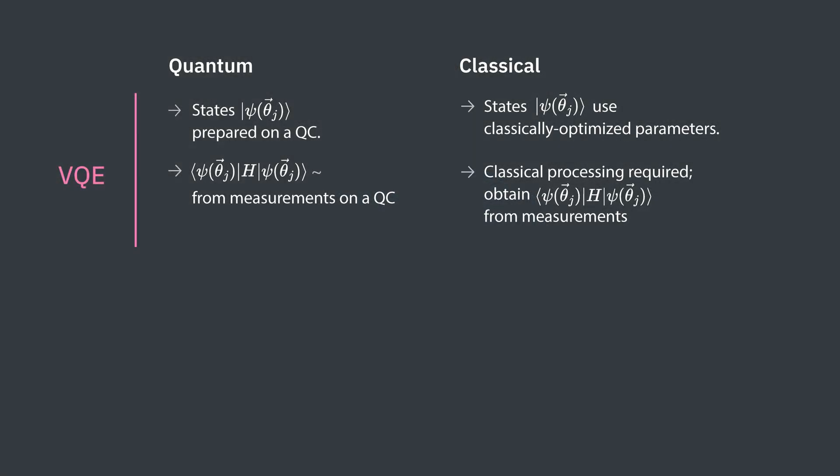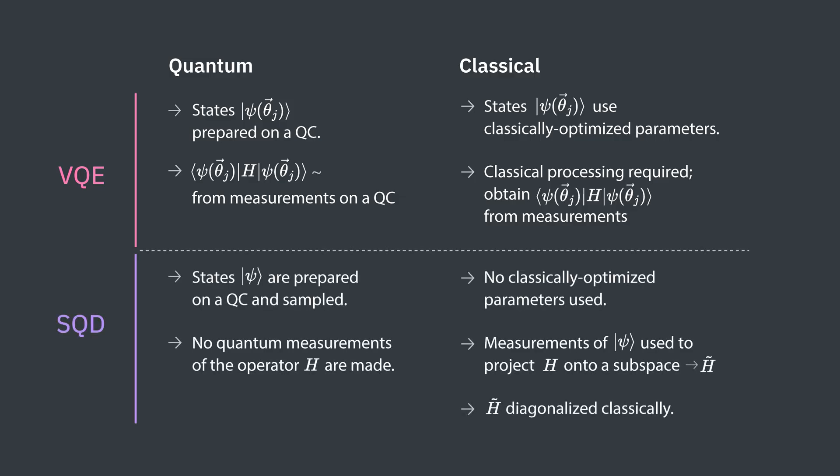Recall that VQE creates states on a quantum circuit using classically optimized parameters. In that case, the state itself is on a quantum computer, though obtaining the target state combines both classical and quantum computing. The expectation value of the operator is calculated using quantum measurements, but some classical combining of terms is also necessary. In contrast, SQD uses a quantum computer to generate a useful subspace onto which the Hamiltonian or other operator can be projected. The Hamiltonian is then diagonalized entirely classically to find the target eigenstate.